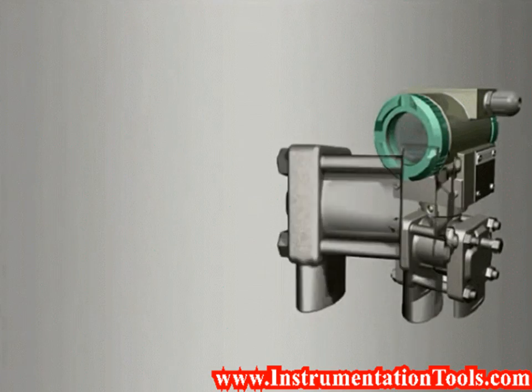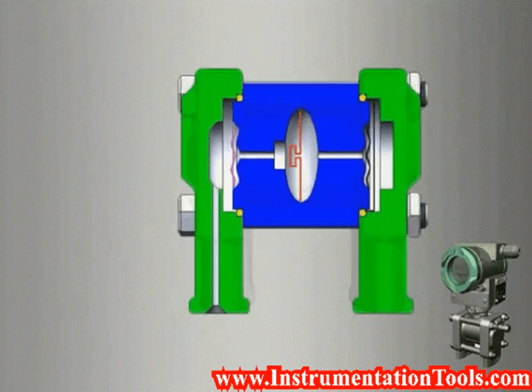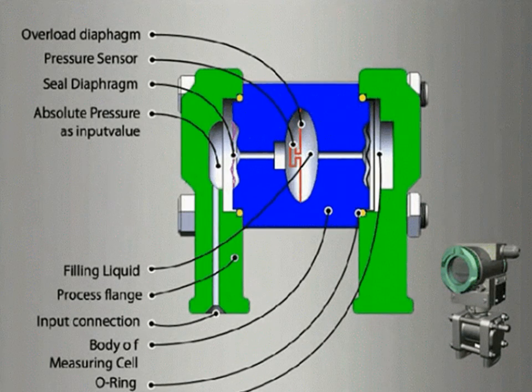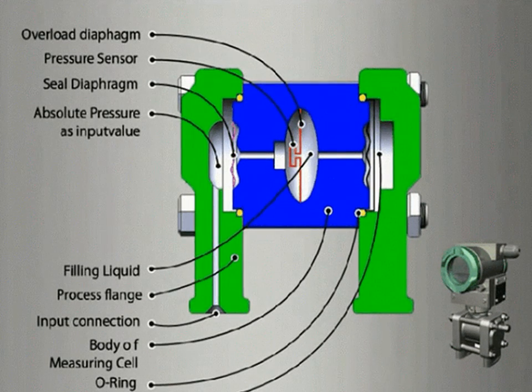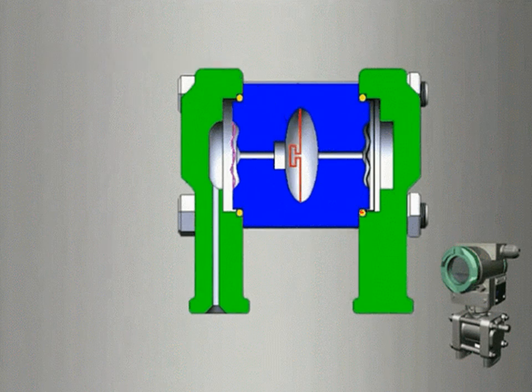These resistors are connected in a standard Wheatstone bridge. The change in resistance is measured using the Wheatstone bridge, and the bridge output is proportional to the applied pressure.